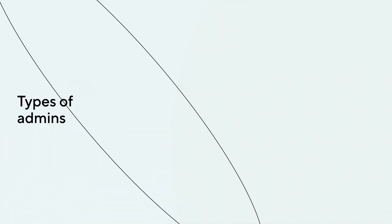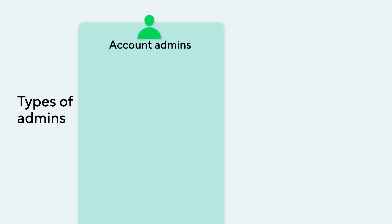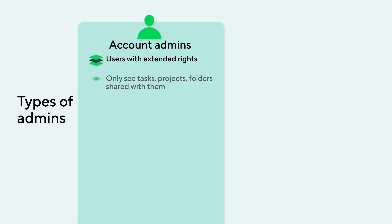Admins are regular users with extended rights. There are two types of admins. Account admins are users with extended rights in the Wrike workspace, but they can still only see tasks, projects, and folders shared with them.